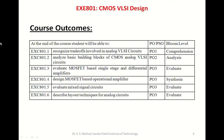Course outcome two is: student will be able to analyze basic building blocks of CMOS analog VLSI circuits. It has been mapped to program outcome two, which is problem analysis, and the Bloom's level expected is analysis. Course outcome three is: student will be able to evaluate MOSFET-based single stage and differential amplifier circuits. It has been mapped to program outcome three, and the Bloom's level expected is evaluation.